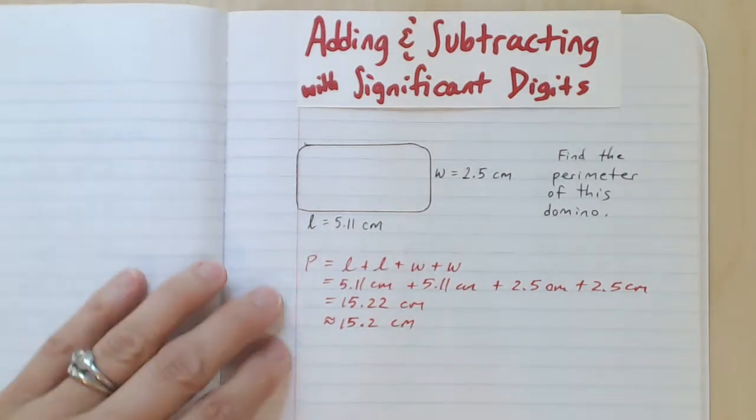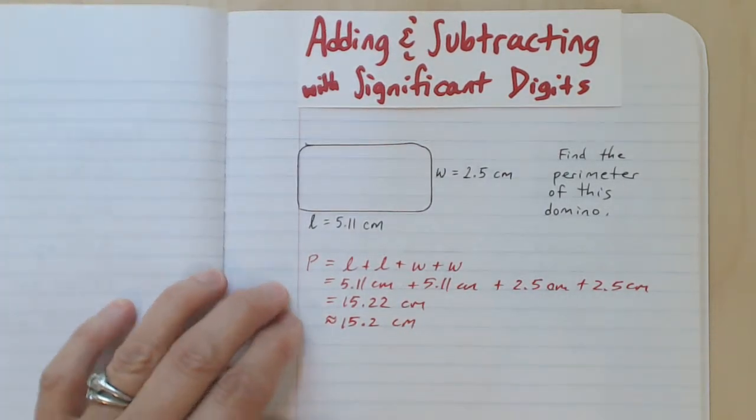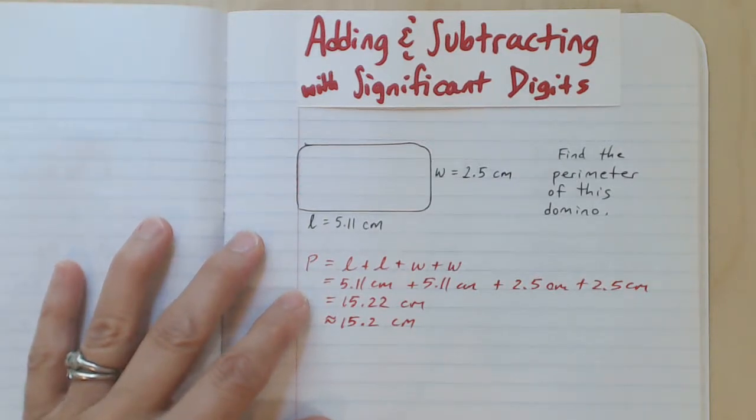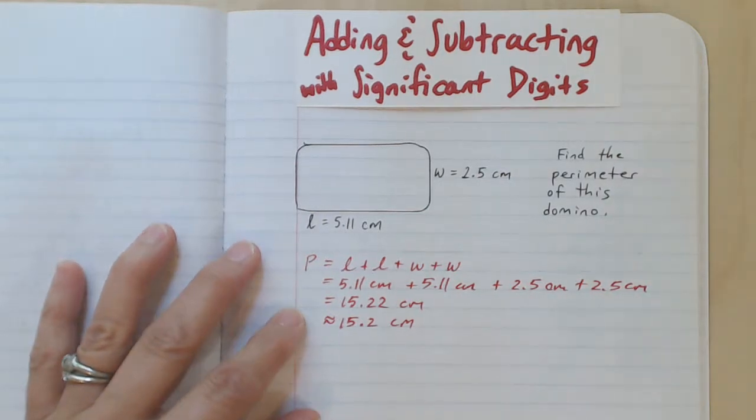So we're going to be doing some third grade arithmetic. We need to add the length plus the length plus the width plus the width and in so doing we find that that sums up to 15.22 centimeters.